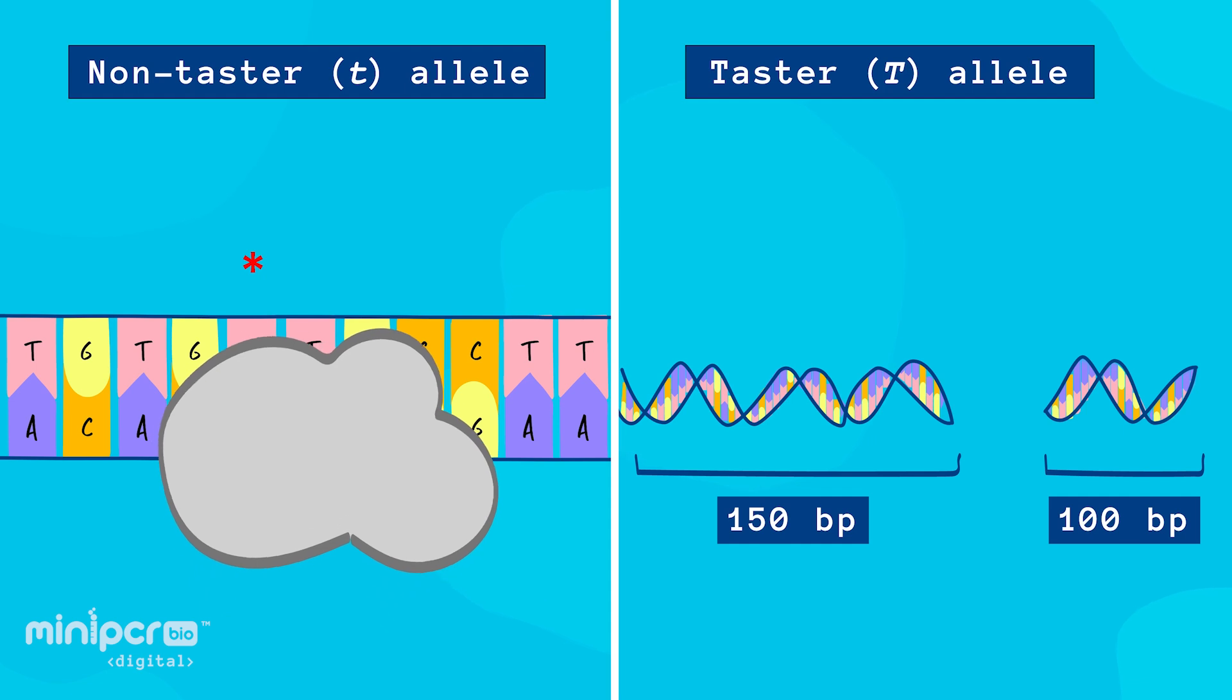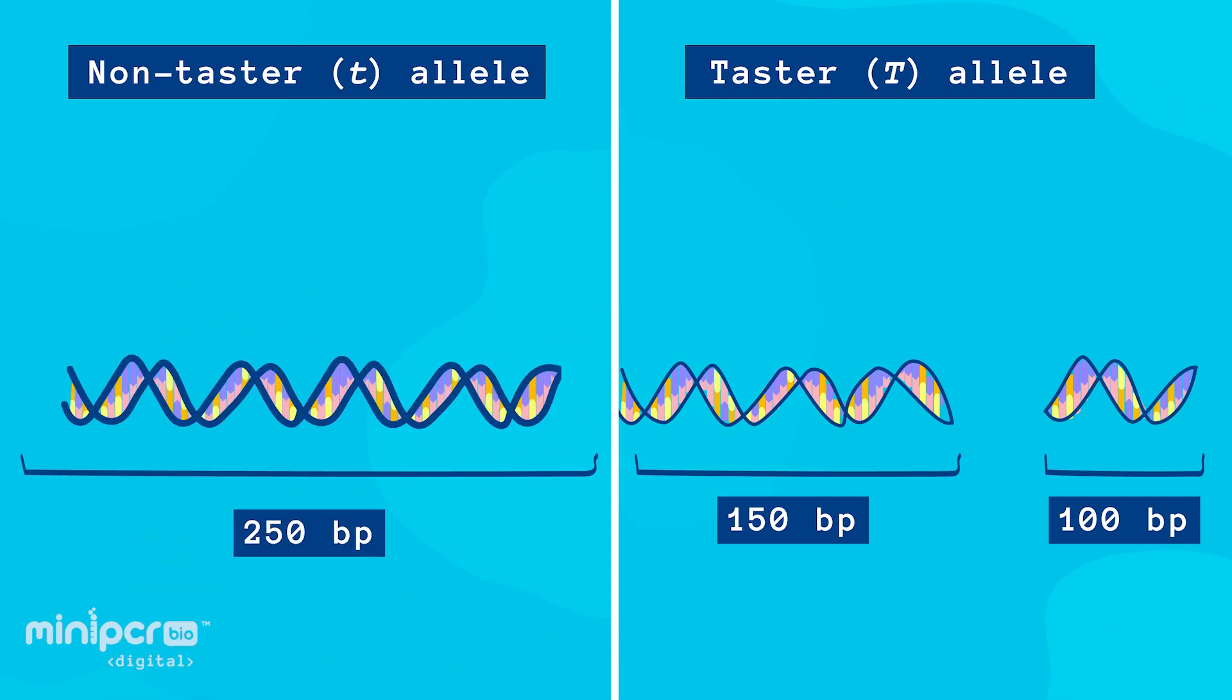This means if you see 150 base pair and 100 base pair bands in a sample, the taster allele is present. If you see a 250 base pair band, the non-taster allele is present.